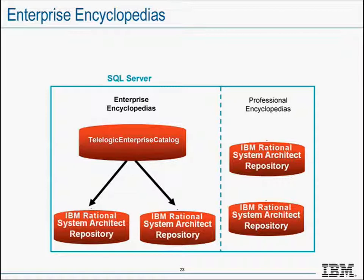You might be lucky that the existing System Architect deployment is already using enterprise encyclopedias, which means you don't need to do any additional configuration. The catalog manager utility, previously mentioned, is used to create the required enterprise catalog, which creates the TeleLogic Enterprise Catalog database.